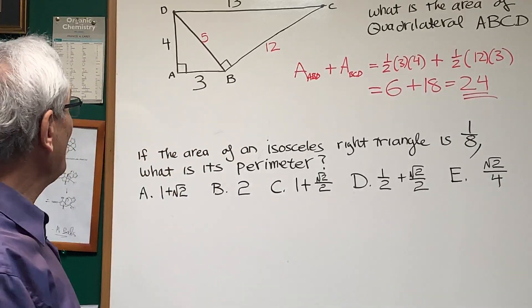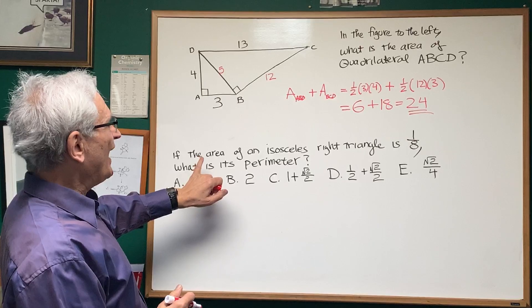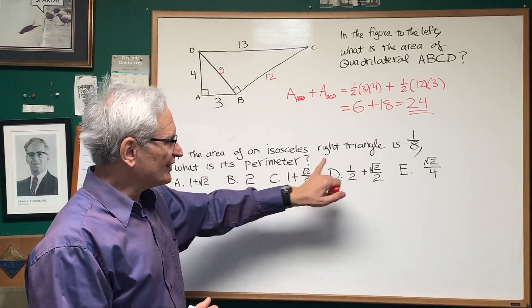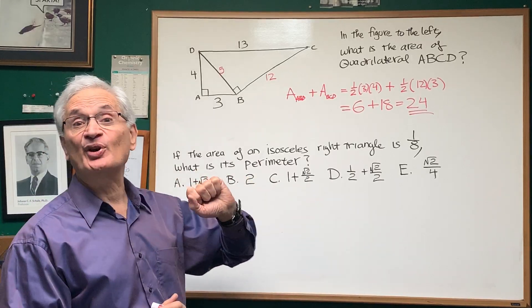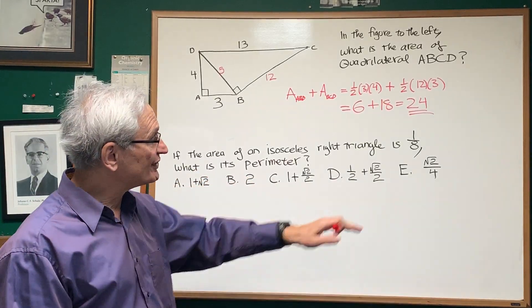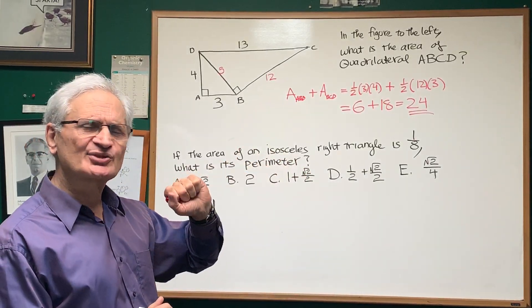Minimum of calculation. Now, let's go to the second problem. If the area of an isosceles right triangle is one-eighth, what is its perimeter? And we're given these choices.